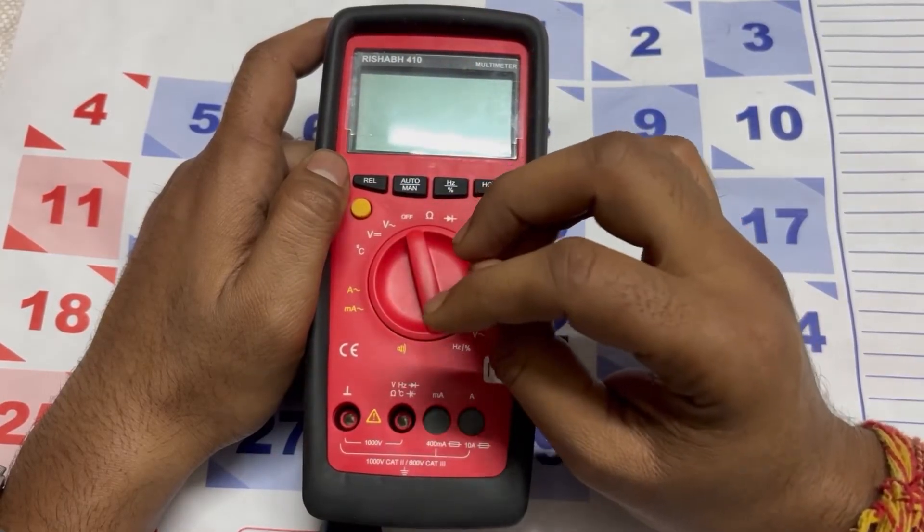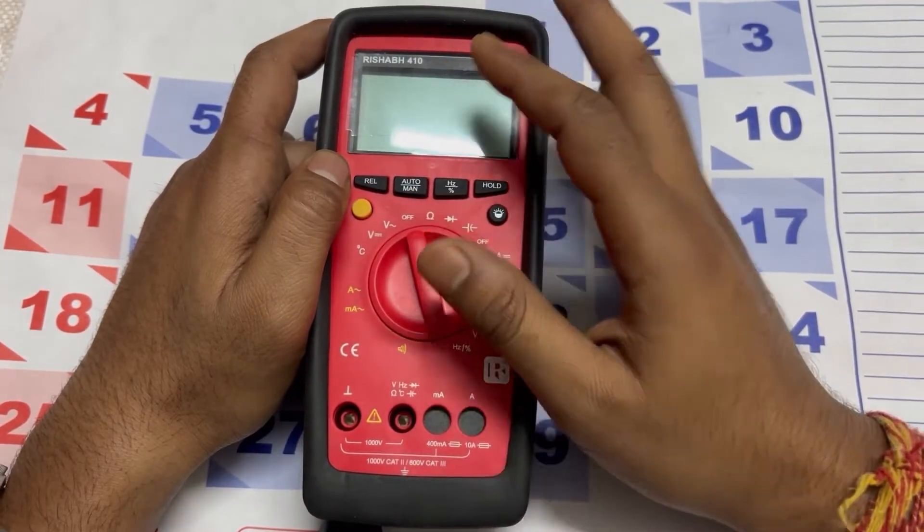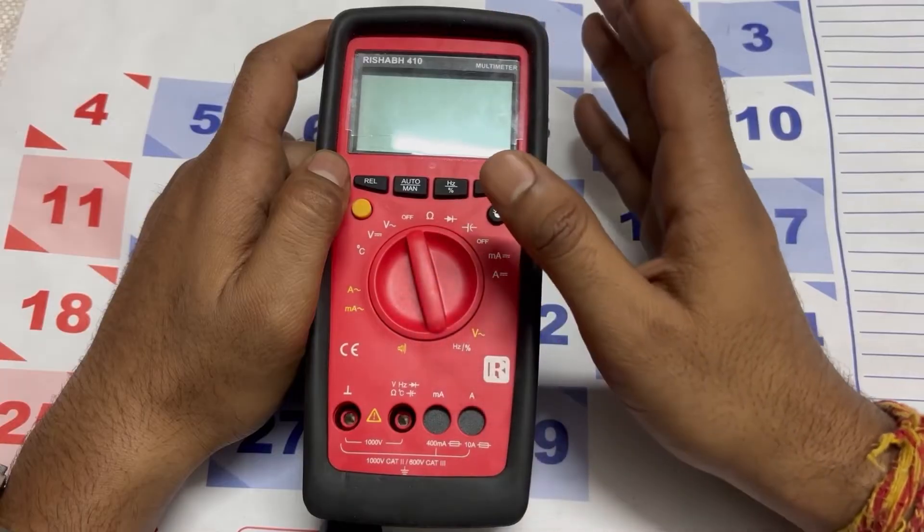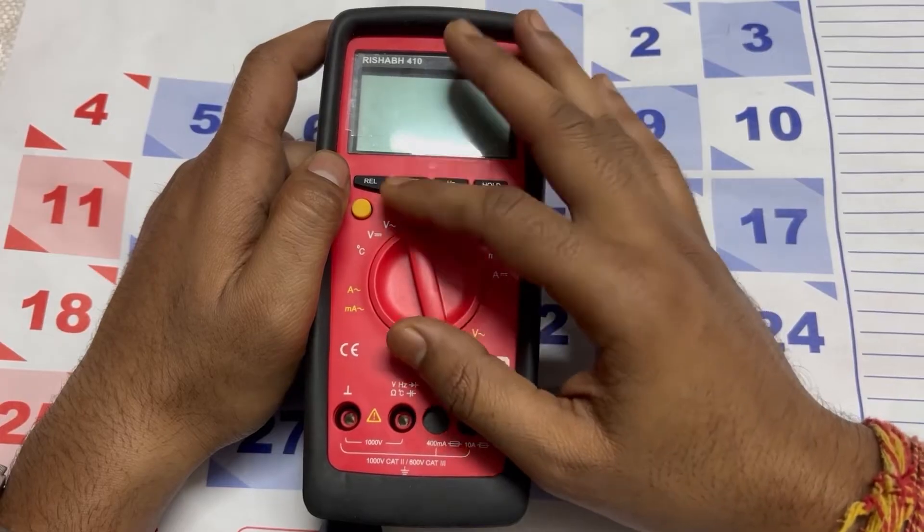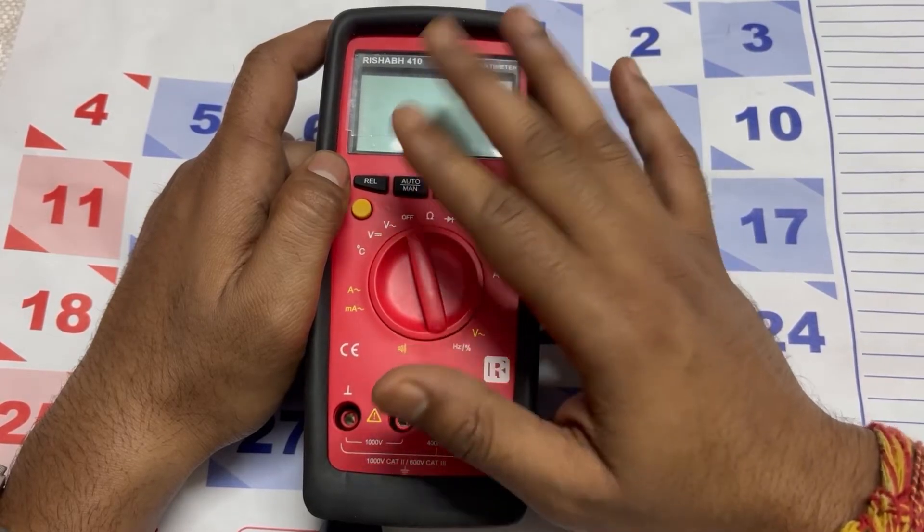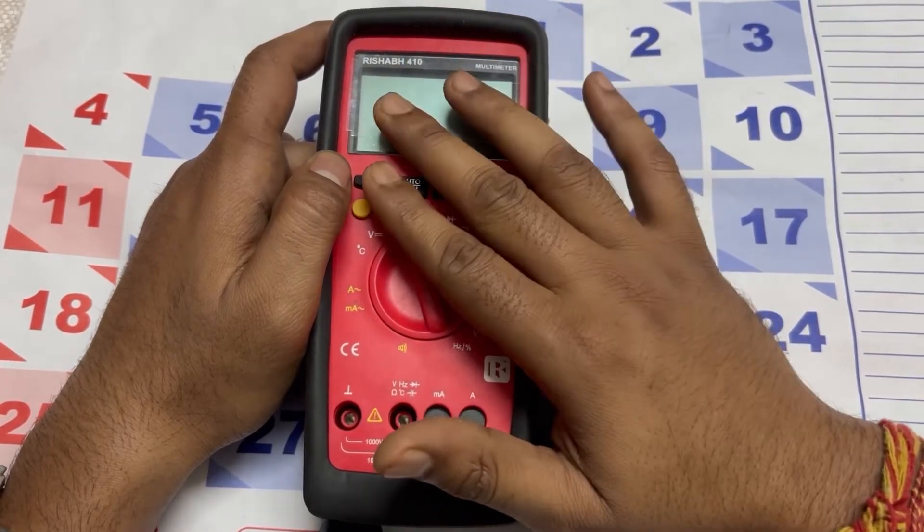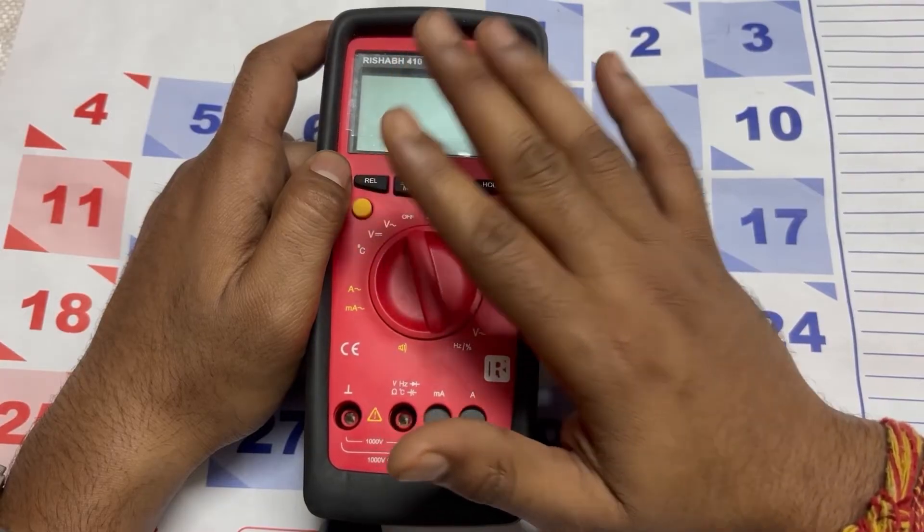It can measure the resistance of electronic components, wires, and circuits. This is useful for checking the continuity of circuits and determining the health of resistors. Capacitance measurement can also be performed by this multimeter, which is essential for checking circuit continuity.